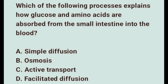Question one: Which of the following processes explains how glucose and amino acids are absorbed from the small intestine into the body? Option A: simple diffusion. Option B: osmosis. Option C: active transport. Option D: facilitated diffusion. The correct answer is Option C — active transport.